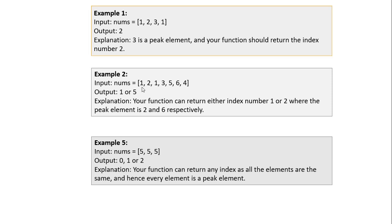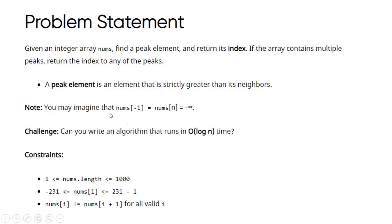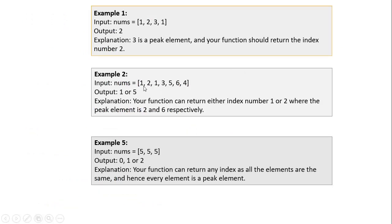In the second example, the array consists of the integers 1, 2, 1, 3, 5, 6, and 4. Note that there is a subtle difference between the largest element in an array and the peak element. A peak element is strictly greater than its neighbors. Here, 2 is greater than its neighbors 1 and 1, and 6 is also greater than its neighbors 5 and 4. Hence you can return either the index of 2, which is 1, or the index of 6, which is 5.